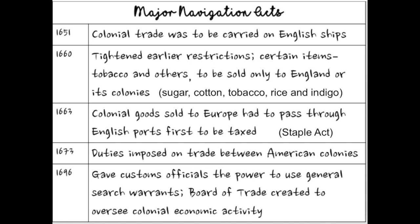In 1660, a Navigation Act tightens earlier restrictions. It says that certain items — tobacco, other cash crops, rice, indigo, cotton, and eventually sugar — can only be sold to England or its colonies. This cuts out a complete market from Europe for these cash crops, because now colonists are not supposed to sell to places like Spain or the Dutch.